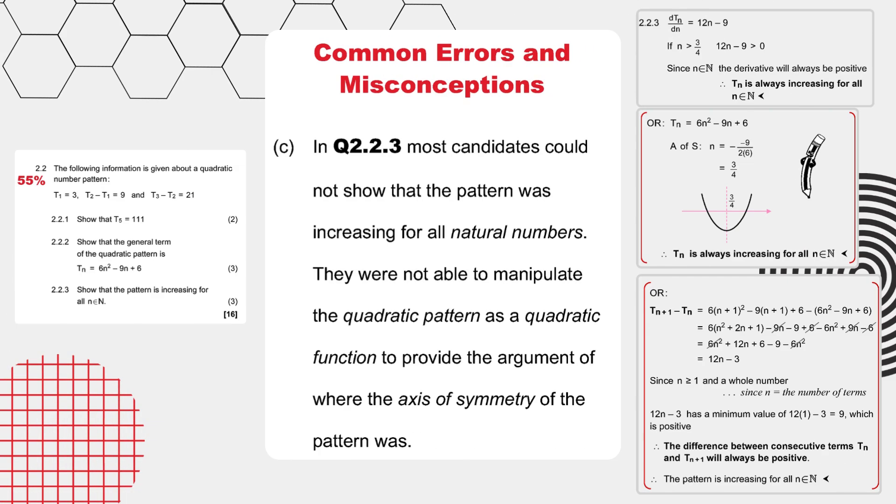Let's have a look now at the common errors and misconceptions laid out by the diagnostic report for question 2.2.3. In this question, most candidates could not show that the pattern was increasing for all natural numbers. They were not able to manipulate the quadratic pattern as a quadratic function to provide the argument of where the axis of symmetry of the pattern was.